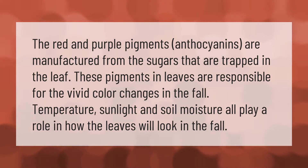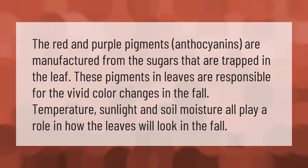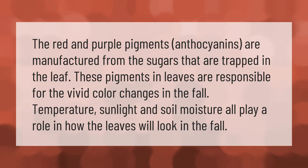The red and purple pigments, anthocyanins, are manufactured from the sugars that are trapped in the leaf. These pigments in leaves are responsible for the vivid color changes in the fall. Temperature, sunlight, and soil moisture all play a role in how the leaves will look in the fall.